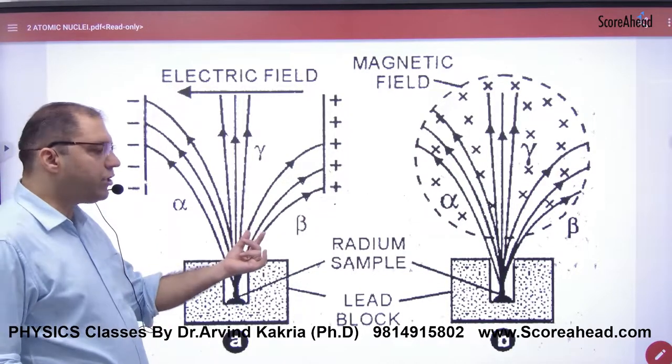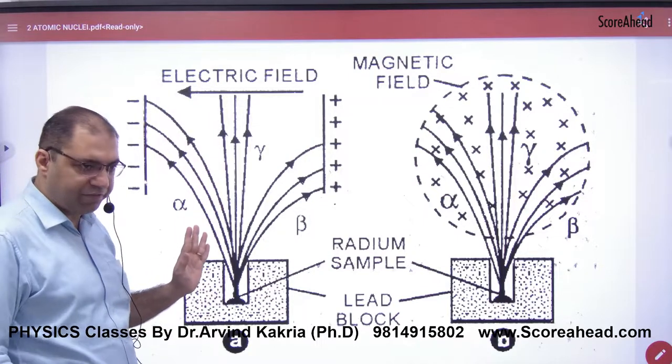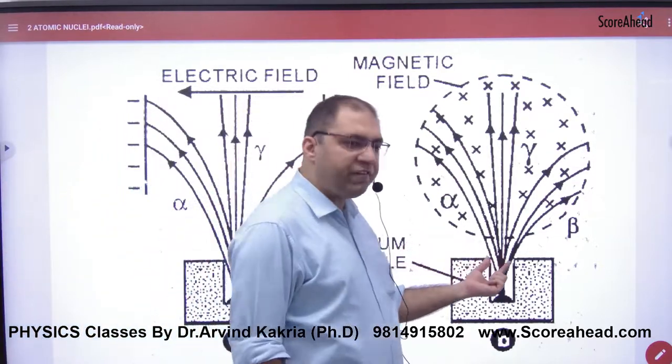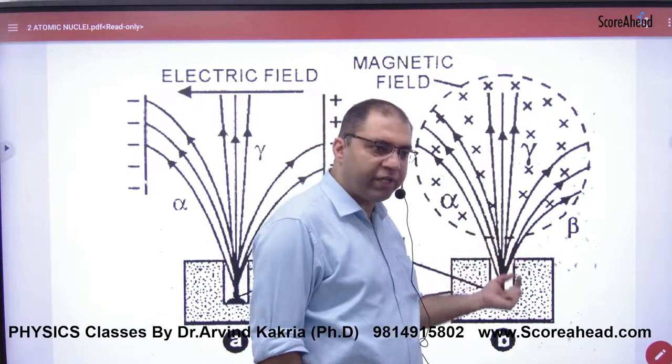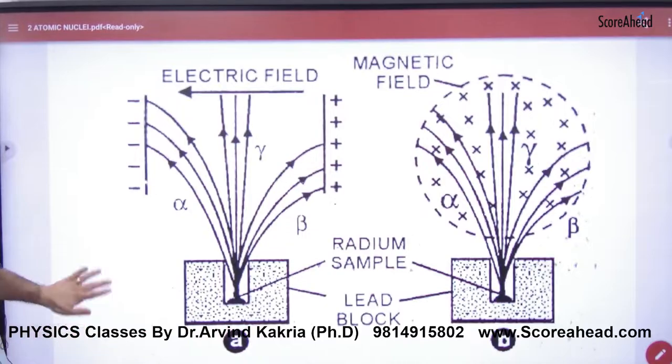Alpha and beta are affected by electric field, but gamma is not. Alpha and beta are also affected by magnetic field, but gamma is not. These are their properties.